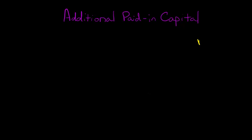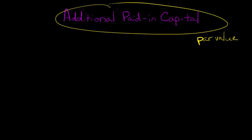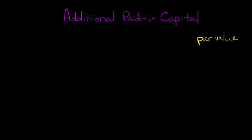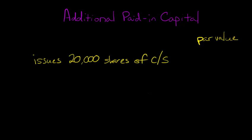In our last video, we talked about computing the par value of common or preferred stock. And in this video, we're going to talk about the next component, additional paid-in capital. I'm just going to jump right in and give an example of a situation where you have a firm that issues 20,000 shares of common stock at $35 a share.